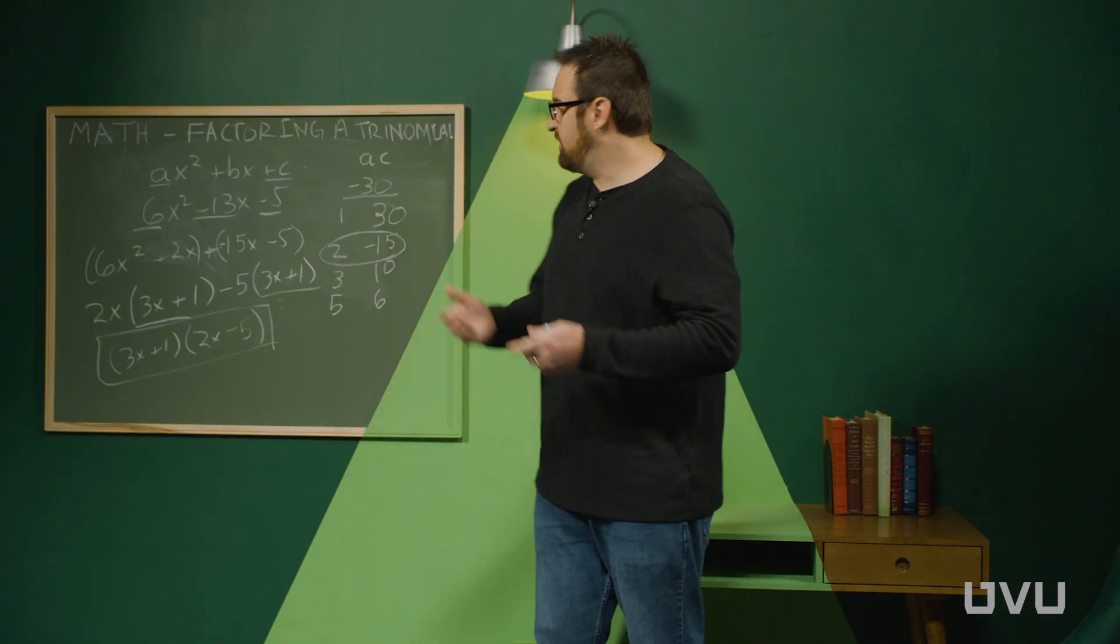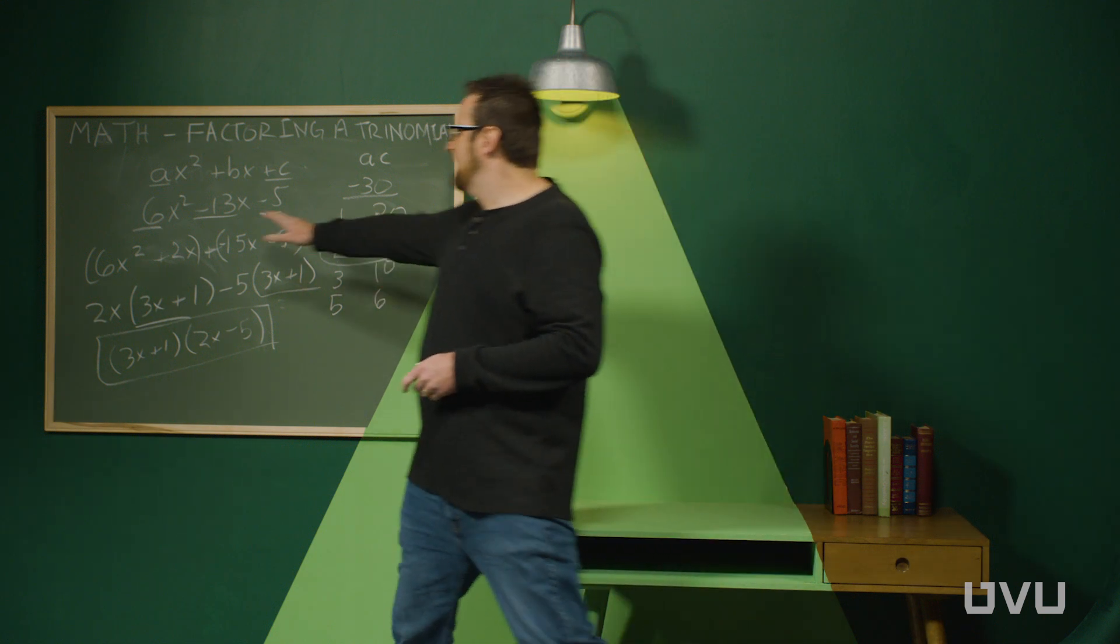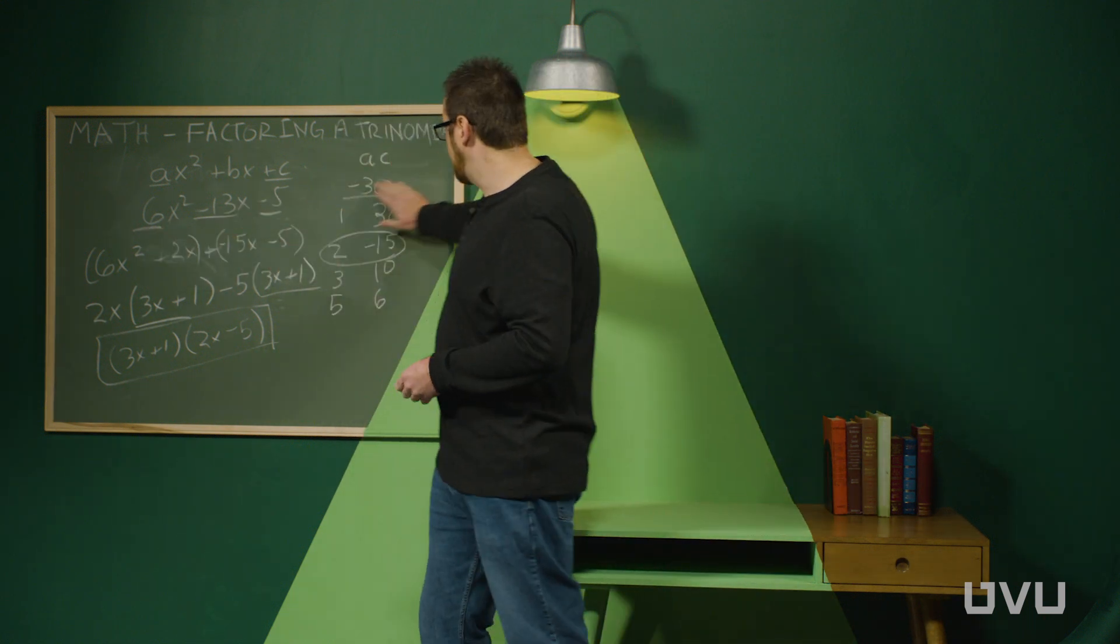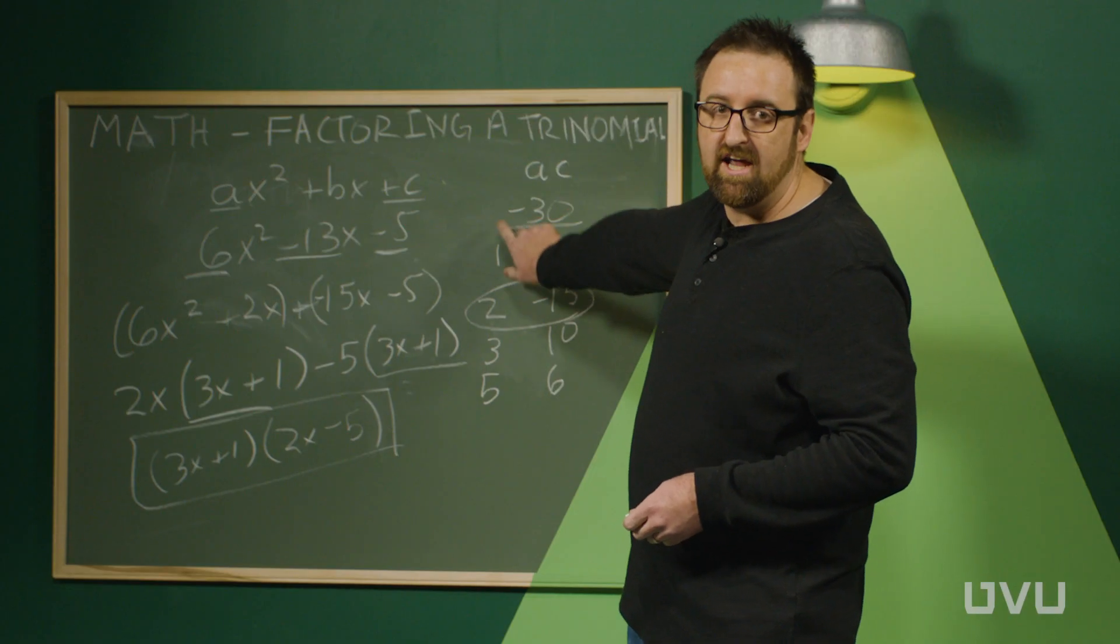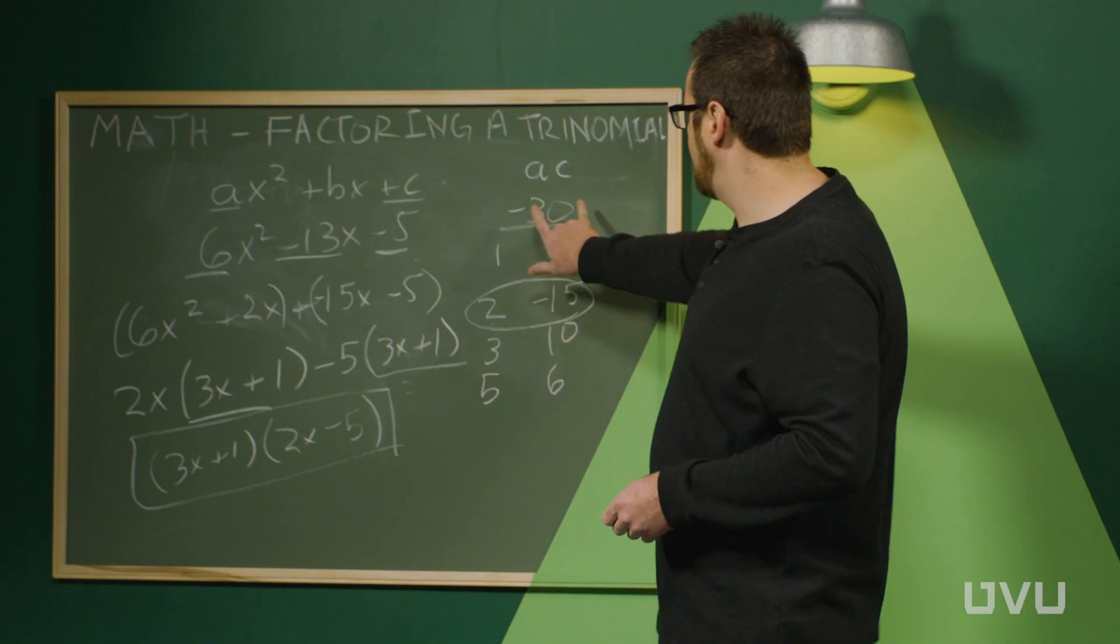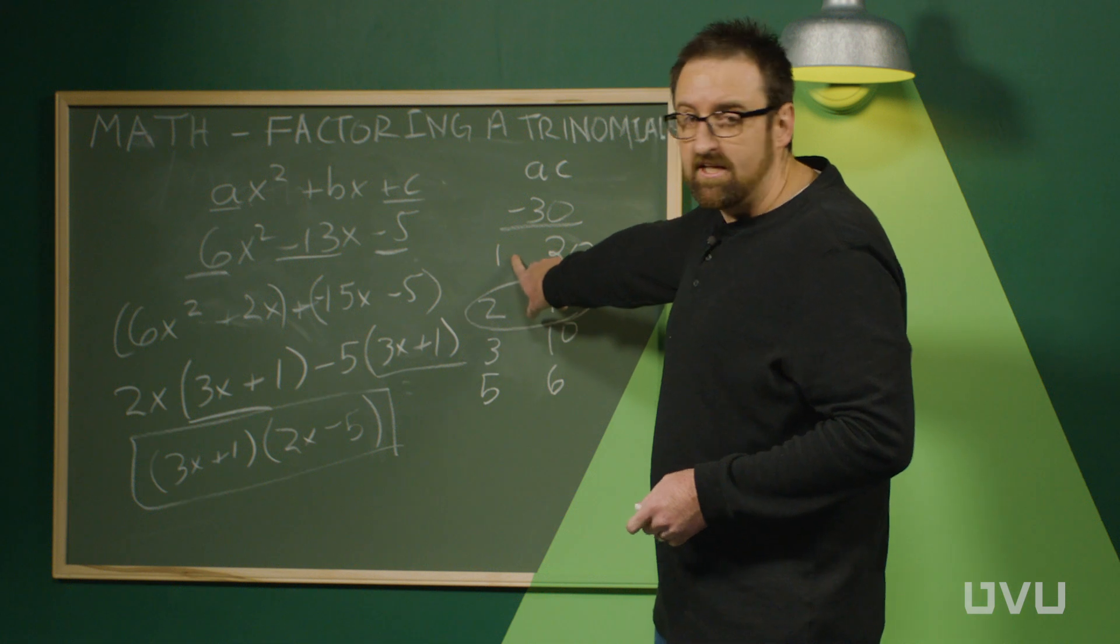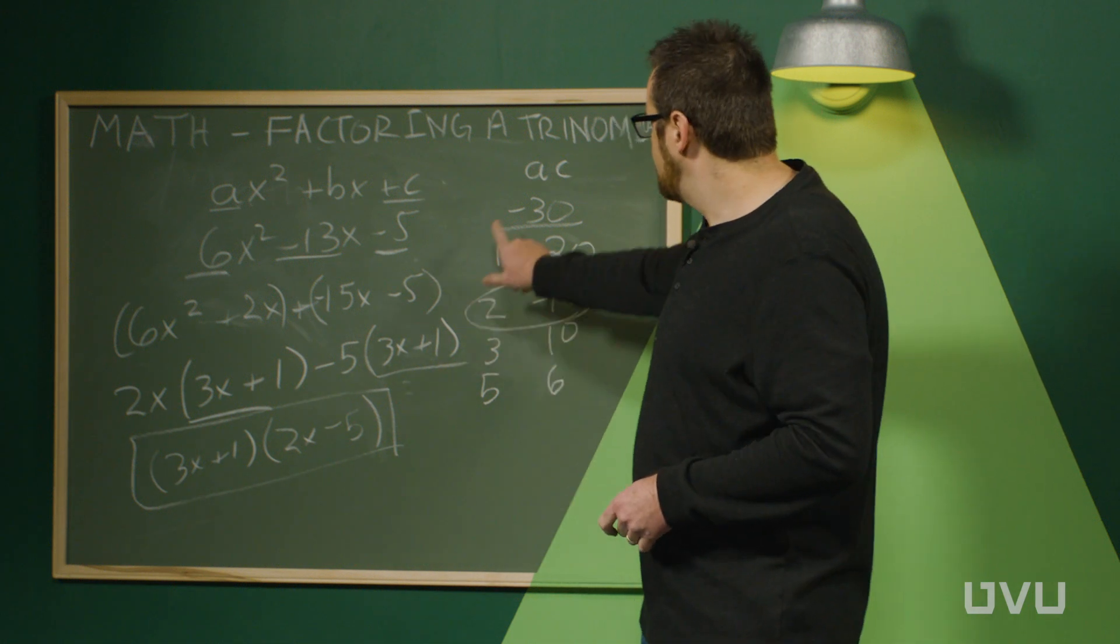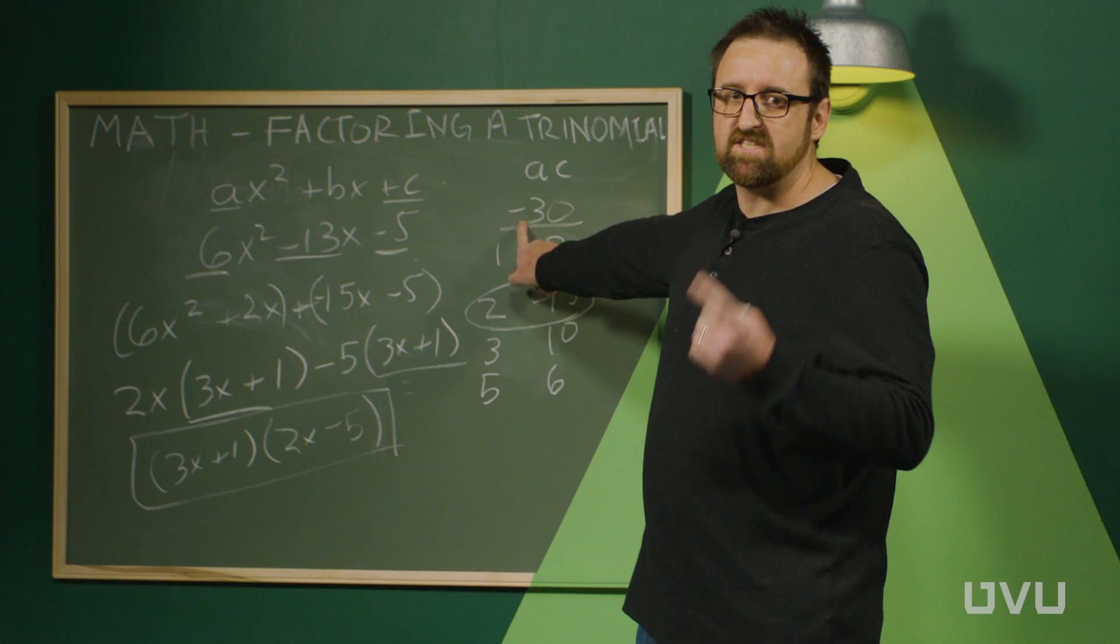So to summarize, the way you process this method is you take the first coefficient with the last coefficient, multiply them together. Ignore the sign for a minute and write down all the factor pairs of the number that you got. I think the easiest way to do that is to count. Once you have all the factor pairs, you keep track of the sign.